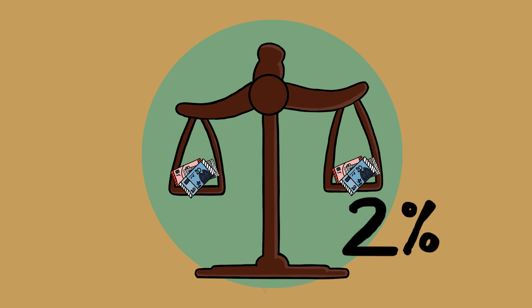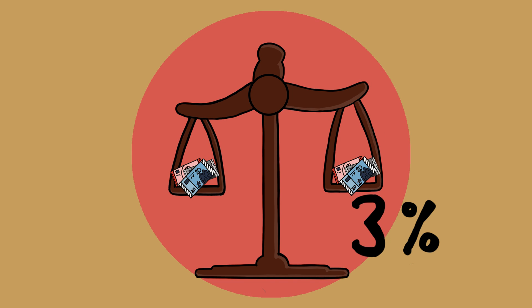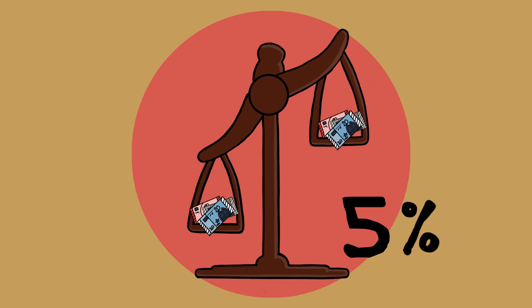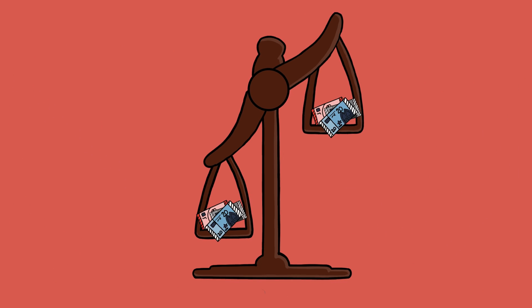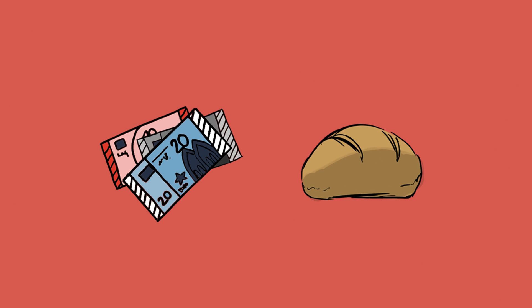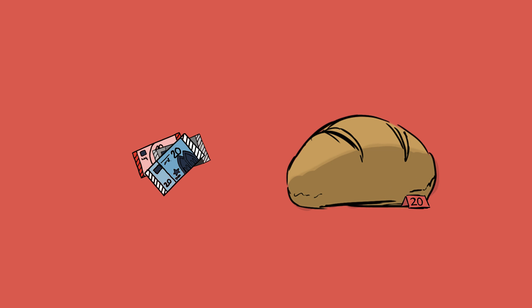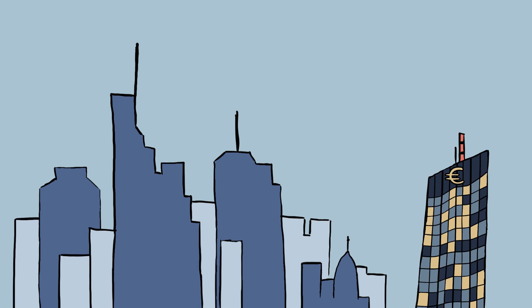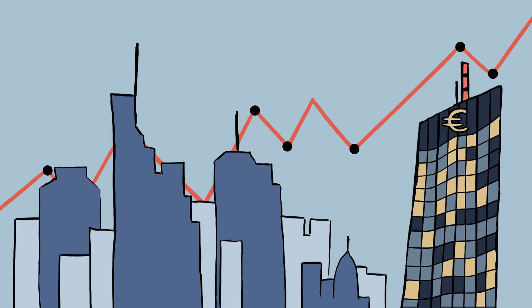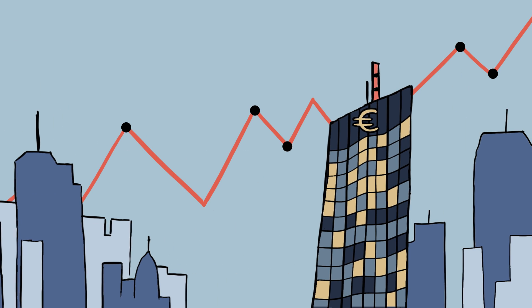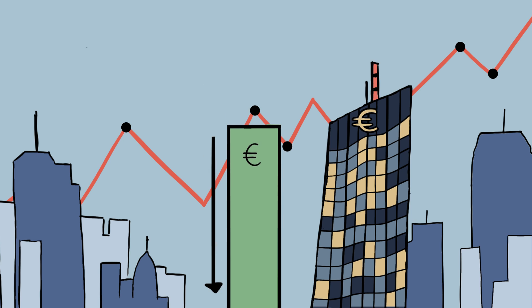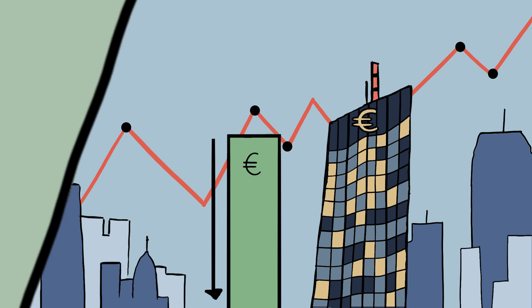An inflation rate that is too high, however, poses a serious problem. If money loses too much value, prices rise disproportionately — the loaf of bread could then cost 20 euros. To reduce the inflation rate, central banks can raise the main interest rate, which slows down the economy and reduces pressure on prices.